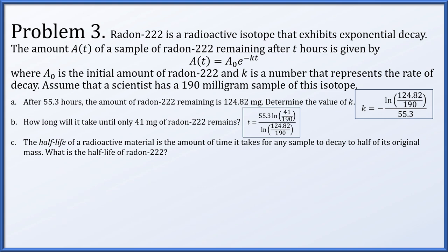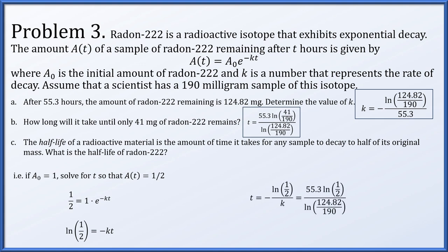Part c asks for the half-life: the time for any sample to decay to half its original mass. Setting one-half equal to e to the negative kt, taking the natural log, and dividing by negative k, then substituting the expression for k, gives the half-life t equals 55.3 times ln(1/2) divided by ln(124.82/190).